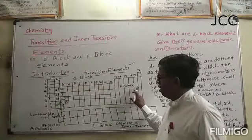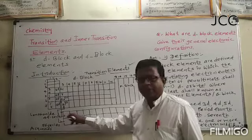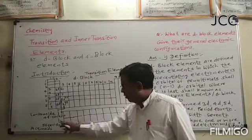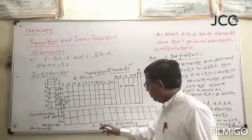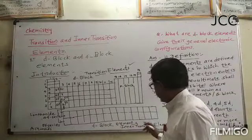And here is the lanthanide and actinide series. So the lanthanide is 4f and actinide is 5f. This is the inner transition element.